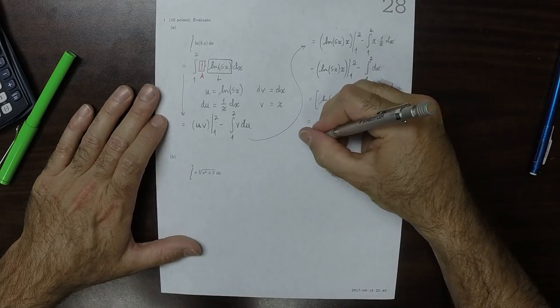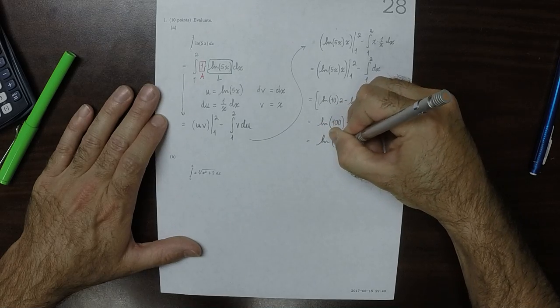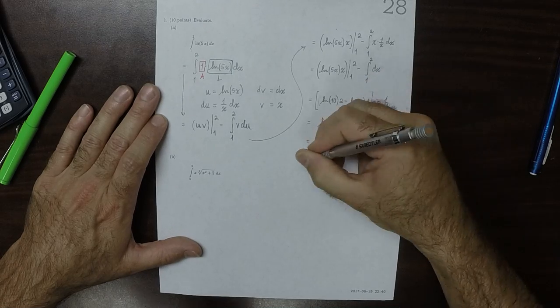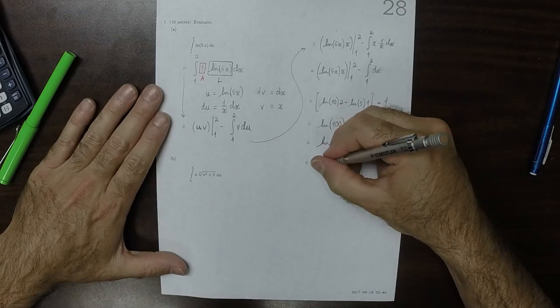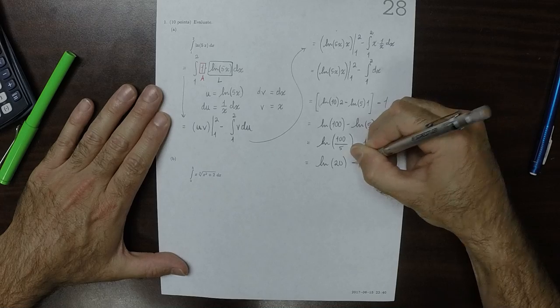And then that's the logarithm of the quotient, 100 over 5, and then minus 1. So that's logarithm of 20 minus 1.